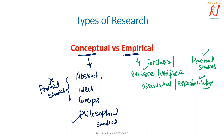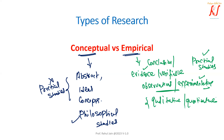Empirical research involves phenomena that use observable or measurable studies. Now, if we talk about qualitative research or quantitative research, as discussed in the previous lecture, we can place both qualitative and quantitative under the criteria of empirical.